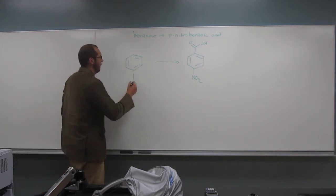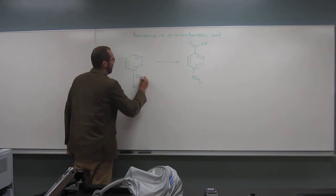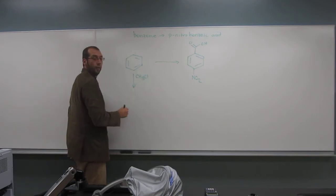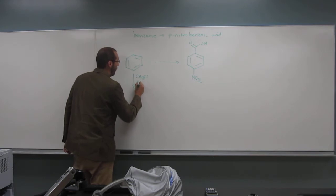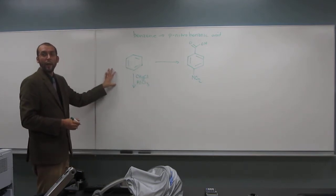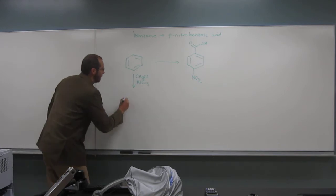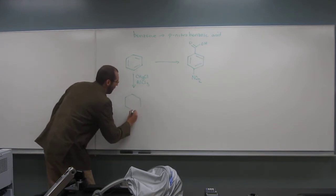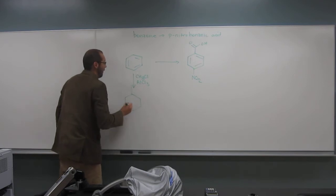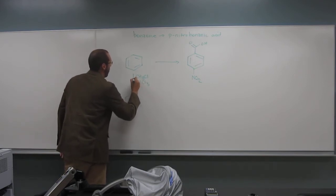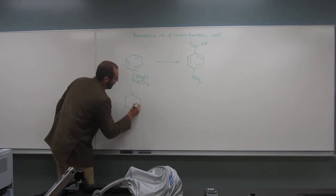What was it? CH3Cl and AlCl3. Yeah, so we'll do a Friedel-Crafts reaction, right? And that gives us toluene. I'll just draw it like this. So it gives us toluene.